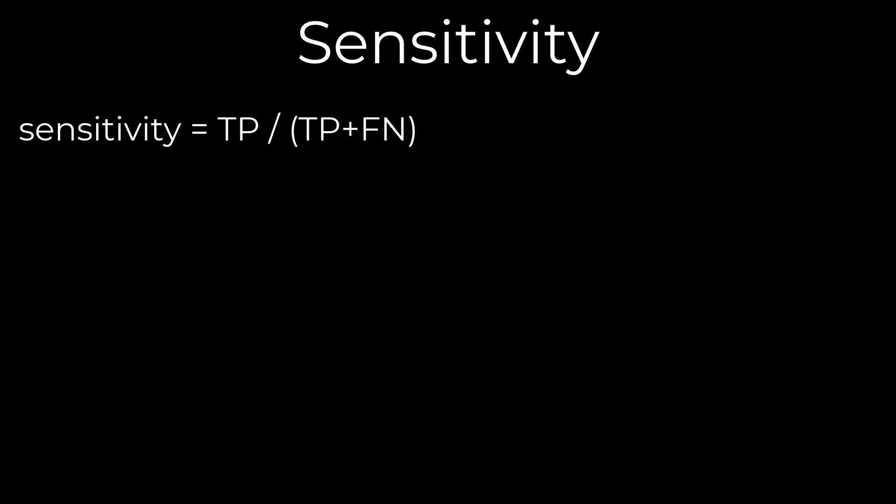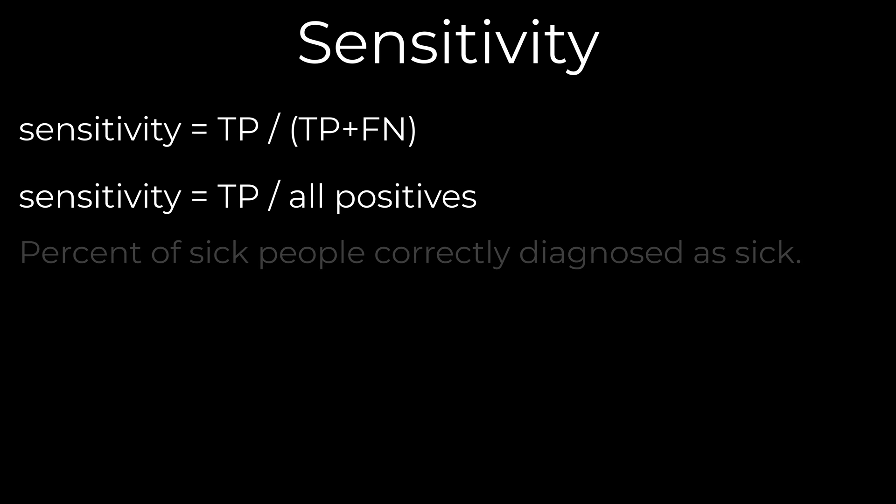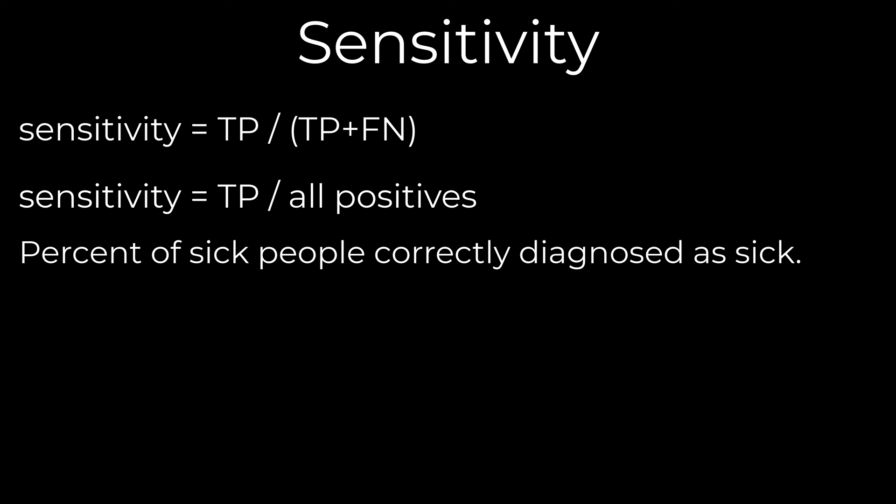Sensitivity and specificity are also ways to measure the performance of a model by measuring the rates of true and false positives and negatives. Sensitivity is the number of true positives (TP) divided by the number of true positives (TP) plus the number of false negatives (FN). The denominator, TP plus FN, equals the number of all positives in the data. In a medical example, sensitivity is the percentage of people with a disease that the test correctly identified as having that disease.